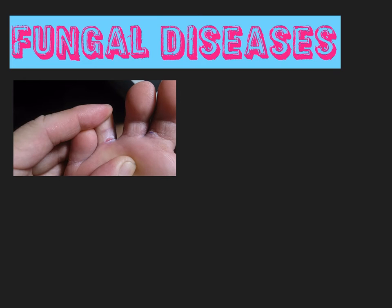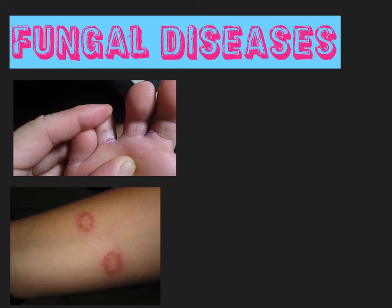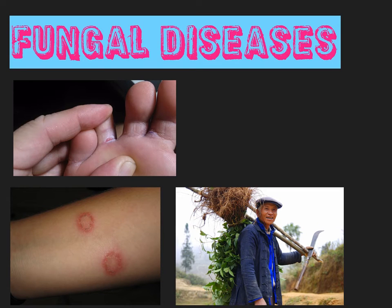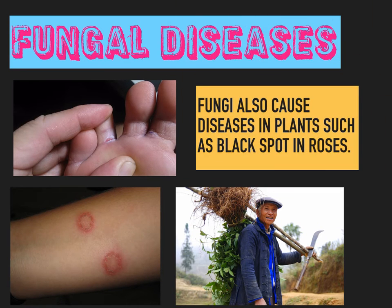Diseases caused by fungi aren't quite as common as some of the other pathogens you come across. Some examples you may have heard of are athlete's foot, which you get between your toes; ringworm, which despite its name is actually a fungal infection and has nothing to do with a worm at all; and farmer's lung. As well as causing disease in humans, you'll also need to know about how fungi can cause disease in plants — one good example is black spots, which is damaging to roses.